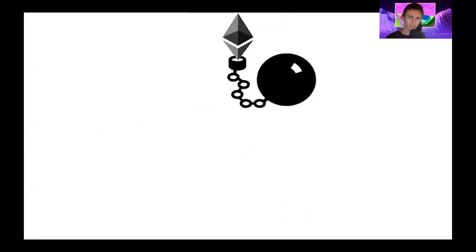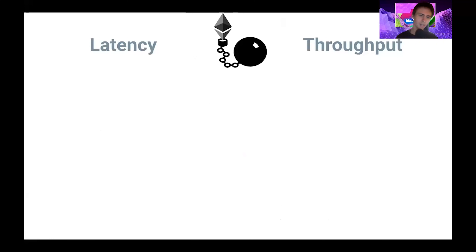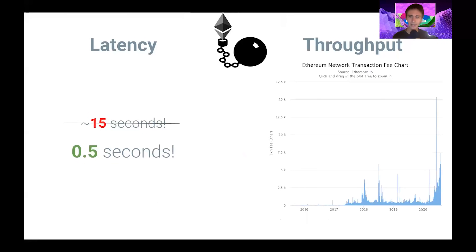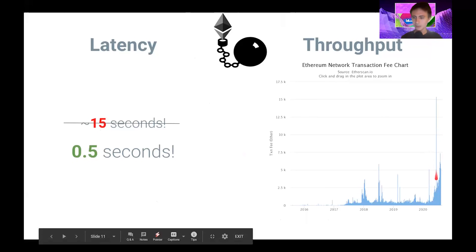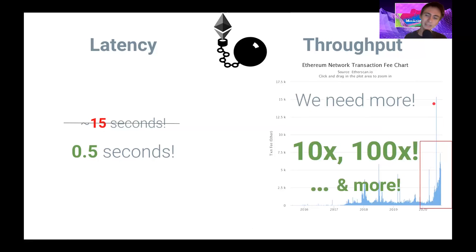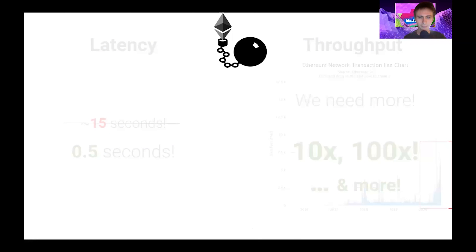Ethereum right now has a bit of a ball and chain because of latency and throughput. Latency for Ethereum is like 15 seconds in the best case — that's just too high; we want it to be five seconds. Throughput is also a serious problem. Fees have been going off the charts and we need 10x, maybe 100x more throughput or probably even more.